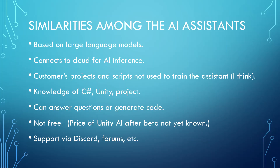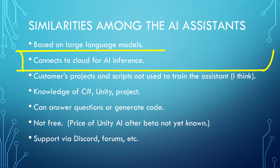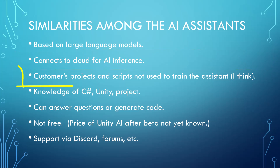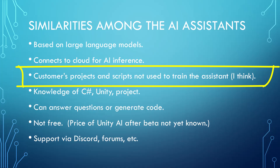Before we start trying some tests, here is a list of things that are similar among the AI assistants in Unity AI, JetBrains AI, and Bezzi. All of them are based on large language models, and they all connect to a cloud to do their processing. Each tool, I believe, claims that the company involved is not training their AI using their customers' projects and scripts. I believe our data is not being used to train these AIs, but you may want to check that if you are particularly concerned.